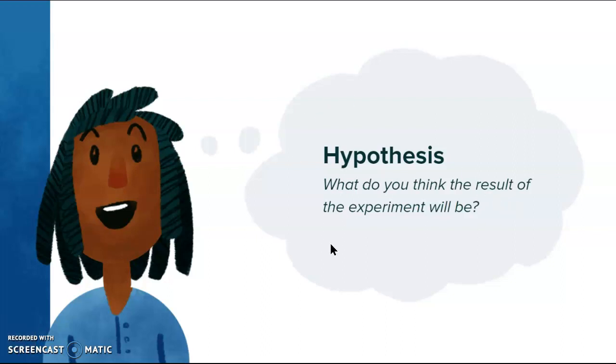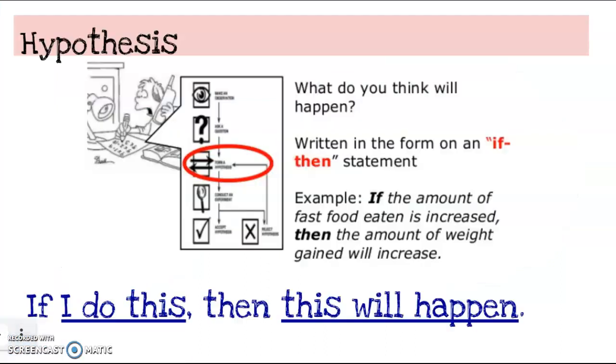And your hypothesis, before the experiment, what you think the result of the experiment will be. Now, when it comes to a hypothesis, you are writing what you think will happen. So it's your opinion there. There's a correct form to write a hypothesis, and it's written as an if-then statement. A statement means you're going to put a period at the end.